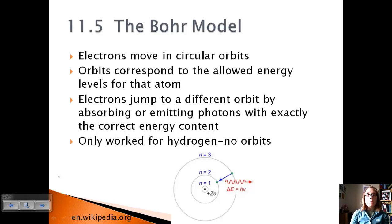The only problem with this model is that it only works for hydrogen, because hydrogen only has one electron. It didn't have multiple orbits to jump to, so we had to find some other way to explain this phenomenon with other elements, because we see atomic spectra for every element.